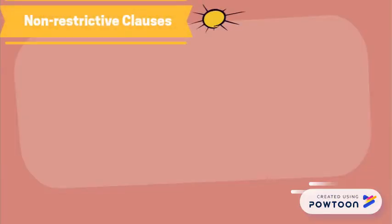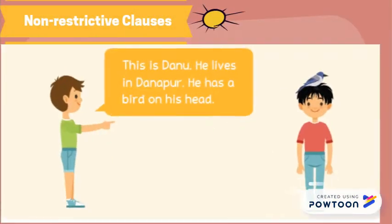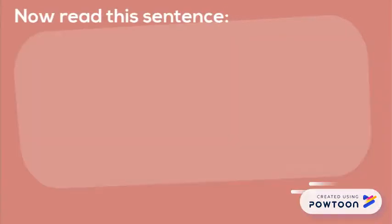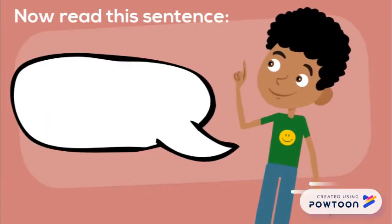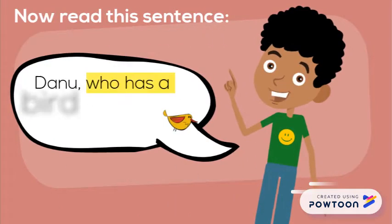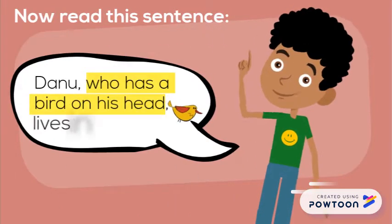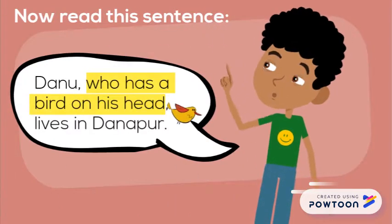Non-Restrictive Clauses. This is Danu. He lives in Danapur. He has a bird on his head. Now read this sentence: Danu, who has a bird on his head, lives in Danapur.